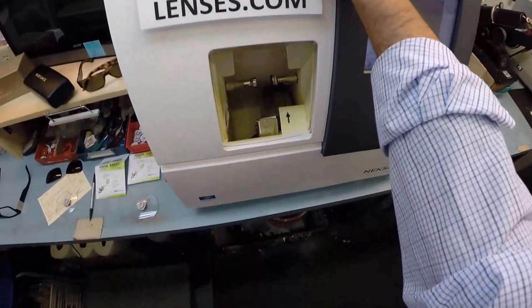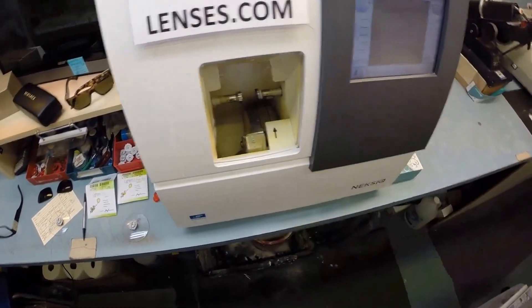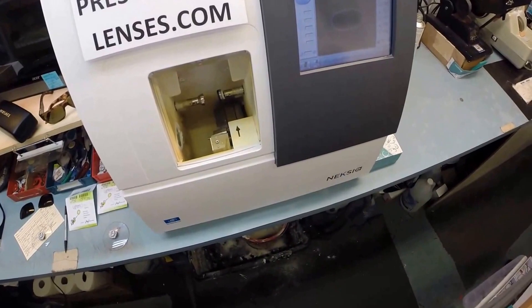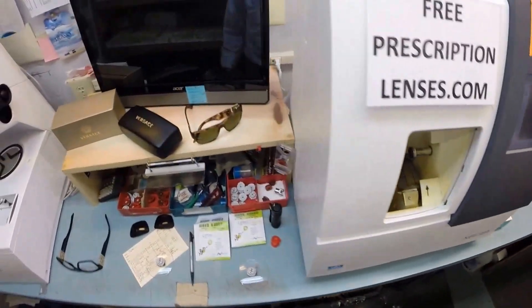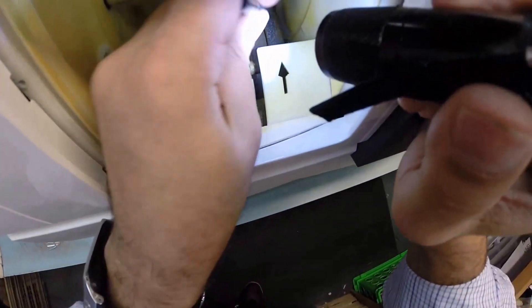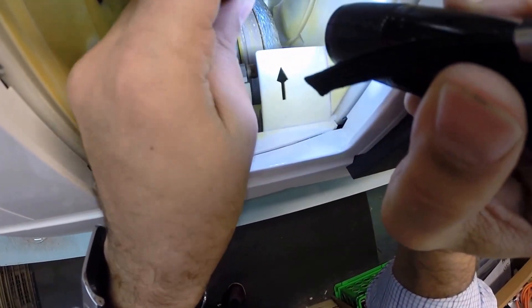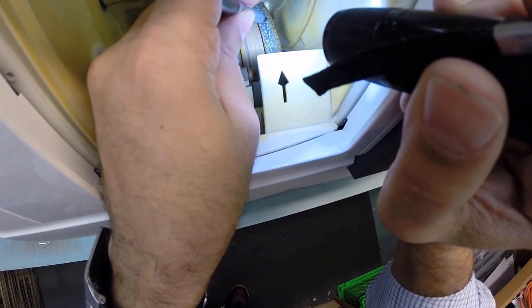Now this is the edger. This is what costs forty thousand dollars and weighs 200 pounds. I recommend everyone go out and buy their own and put it on your kitchen counter. Then you won't need me anymore to make your glasses—you can do it at home. The actual cutting wheel is over here on the far right.